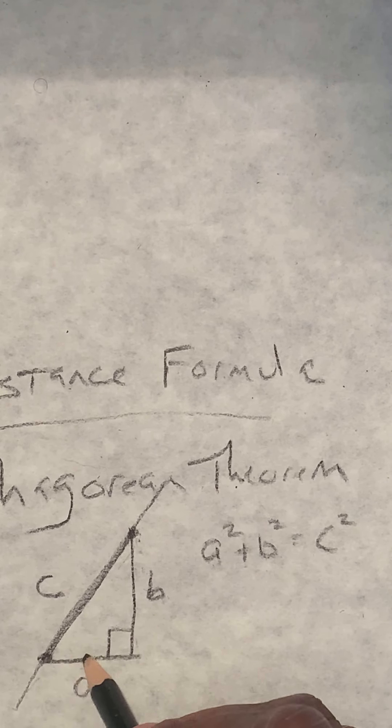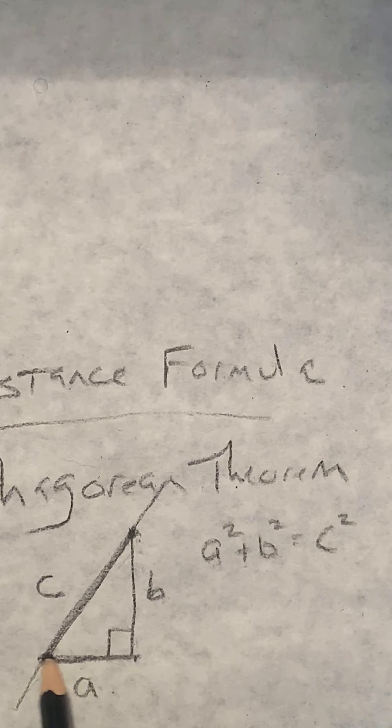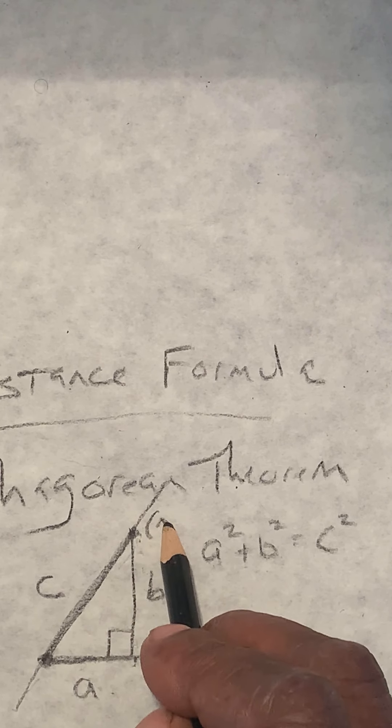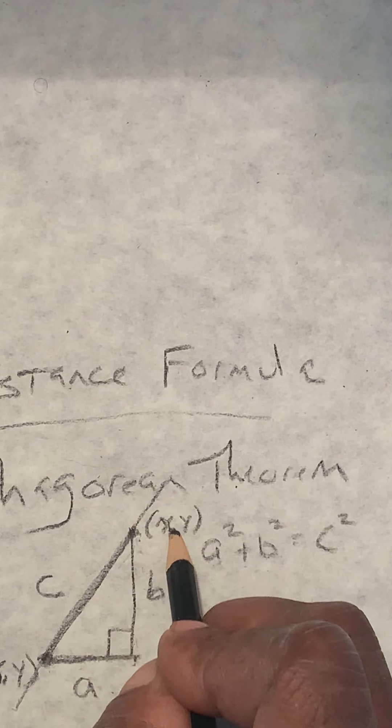So then we say, well, how do we get to know how far this is? Well, it's our change in X, right? So that's our change in X. That's the X coordinate here, (X, Y), and the X coordinate here, (X, Y). So to distinguish them, we'll call this 1 and this 2.